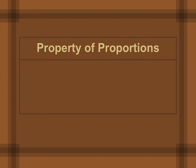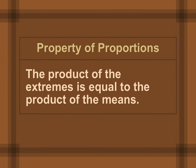The property of proportion says that the product when you multiply the extremes gives you the same number as when you multiply the means. So if you multiply the first and fourth number, it equals the product of the second and third number. You may have heard this as cross-multiplying — when you cross-multiply, you get an equality statement.